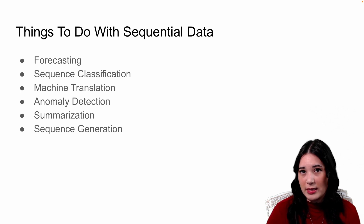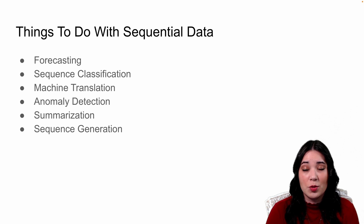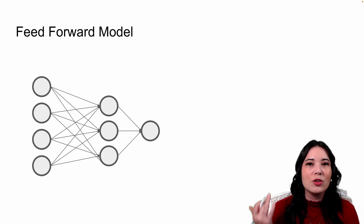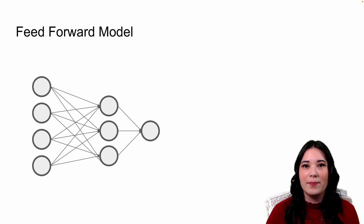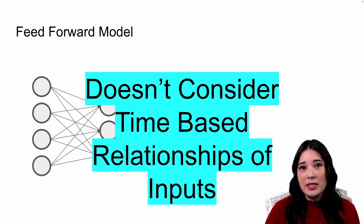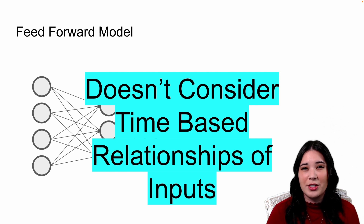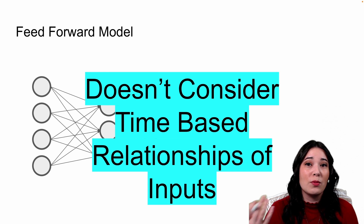These are all really interesting things we could do. Let's look at some model architectures we might try. The first thing we might try is just throwing everything into a feedforward neural network — it might at least provide a good baseline. We can take our sequence, flatten it, and shove it through all of those layers. This might sometimes work, just like we used a feedforward neural network to classify image data using the MNIST dataset. However, this type of model doesn't consider time-based relationships in the input data, so we're sort of throwing away information.